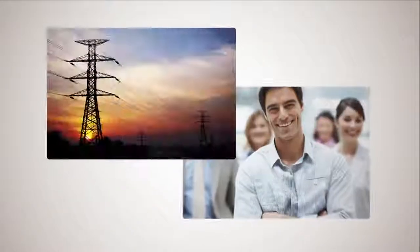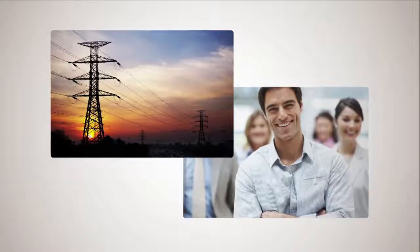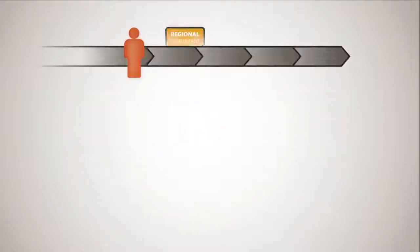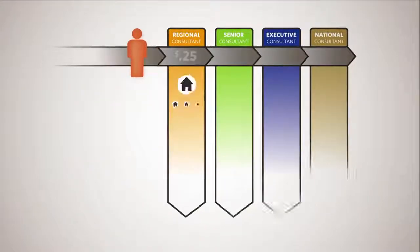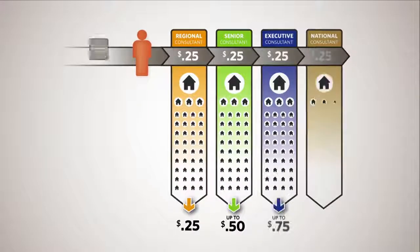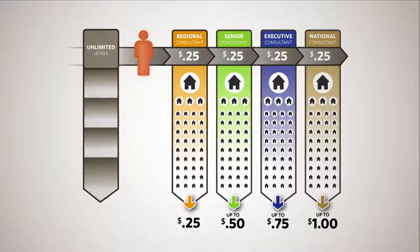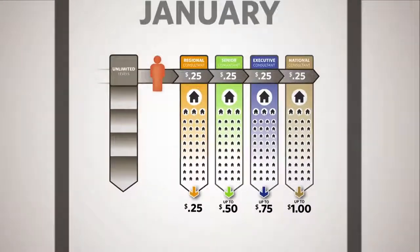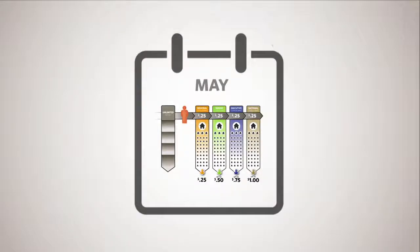While this alone is impressive, Ambit's compensation plan takes residual income one step further to maximize your earning potential. As you move up and promote yourself through the different levels of the organization, you can qualify to earn a bonus on every new customer that comes in through unlimited levels. And this isn't just a one-time bonus. This is another bonus you'll earn month after month after month.